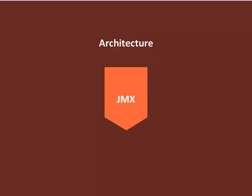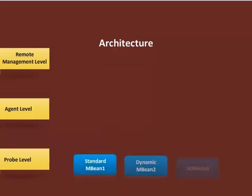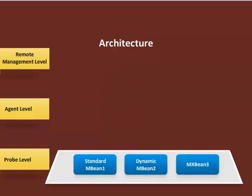JMX uses a three-level architecture: the probe level, the agent level, and the remote management level. The probe level, which is also called the instrumentation level, contains the probes called MBeans for instrumenting the resources.